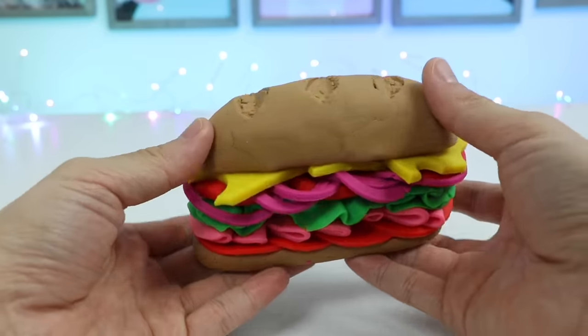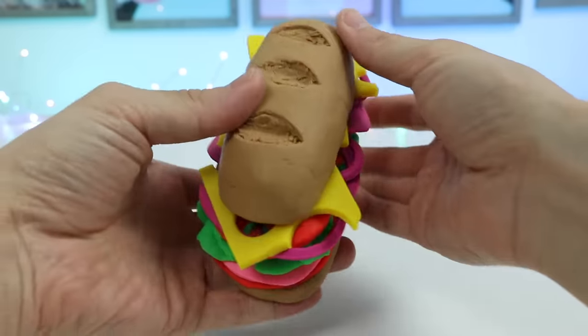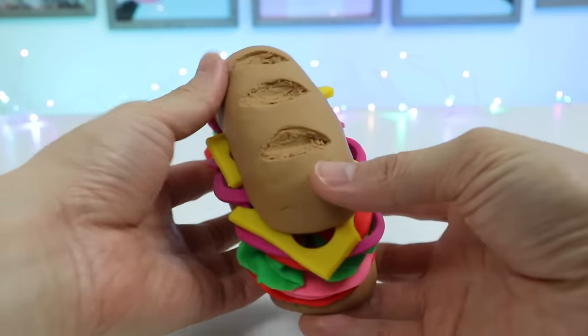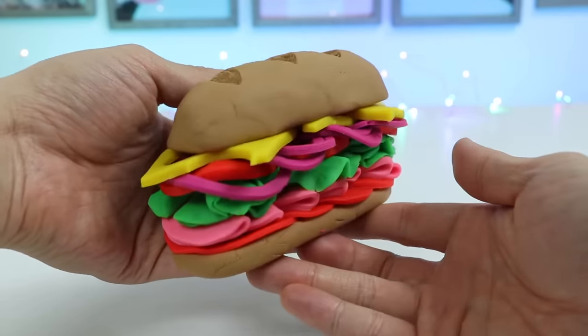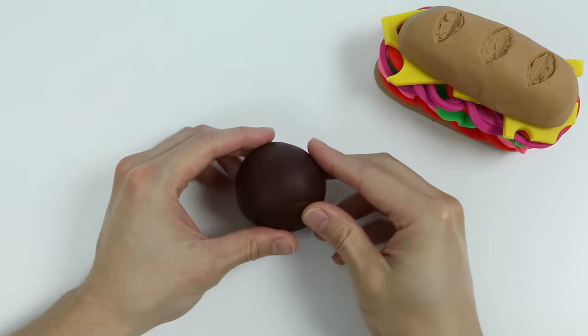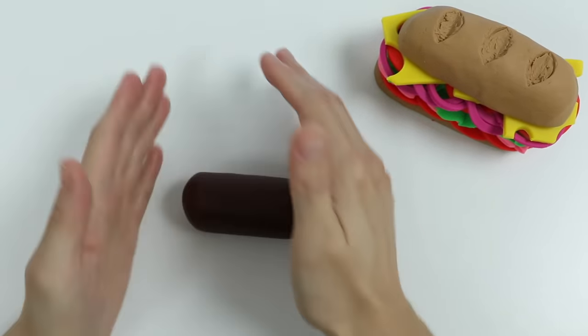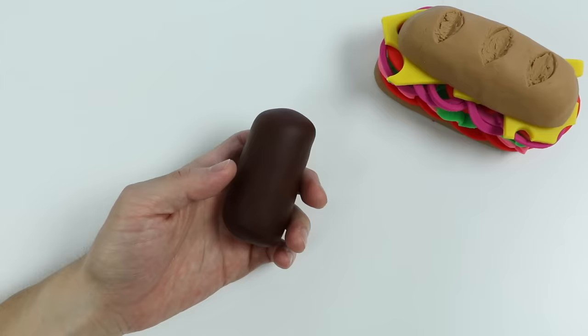This sandwich could feed at least four people. Now if you were to eat this entire sandwich by yourself, you need something to wash it down with, so let's make a Play-Doh soda. All right, let's roll out this dark brown Play-Doh. Now let's use the roller handle to make the bottle neck.